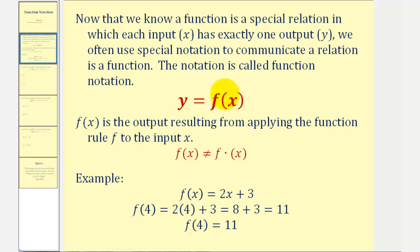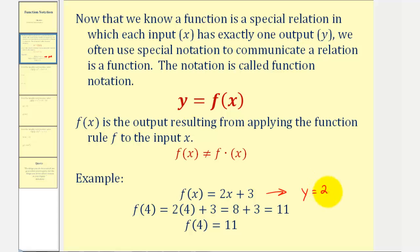When we first see this notation, it's easy to think that this means f times x, but it does not. It's special notation called function notation. As an example, if we were given the function f of x equals two x plus three, the first thing we should recognize is that this is equivalent to the equation y equals two x plus three. But we use this special notation, function notation, to indicate that this equation does represent a function.